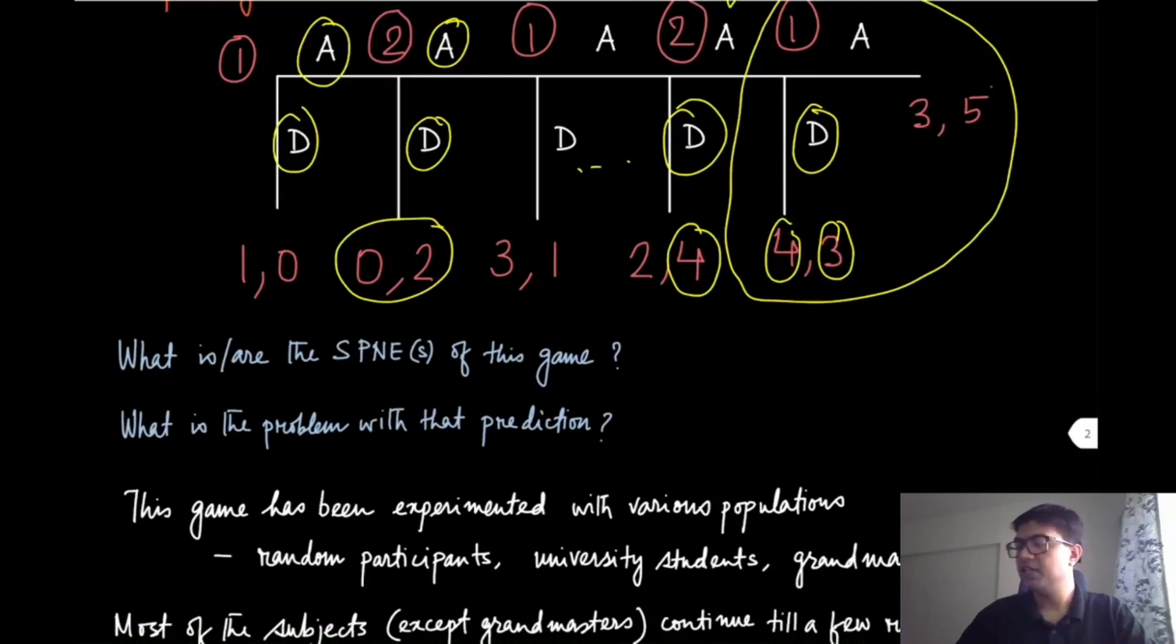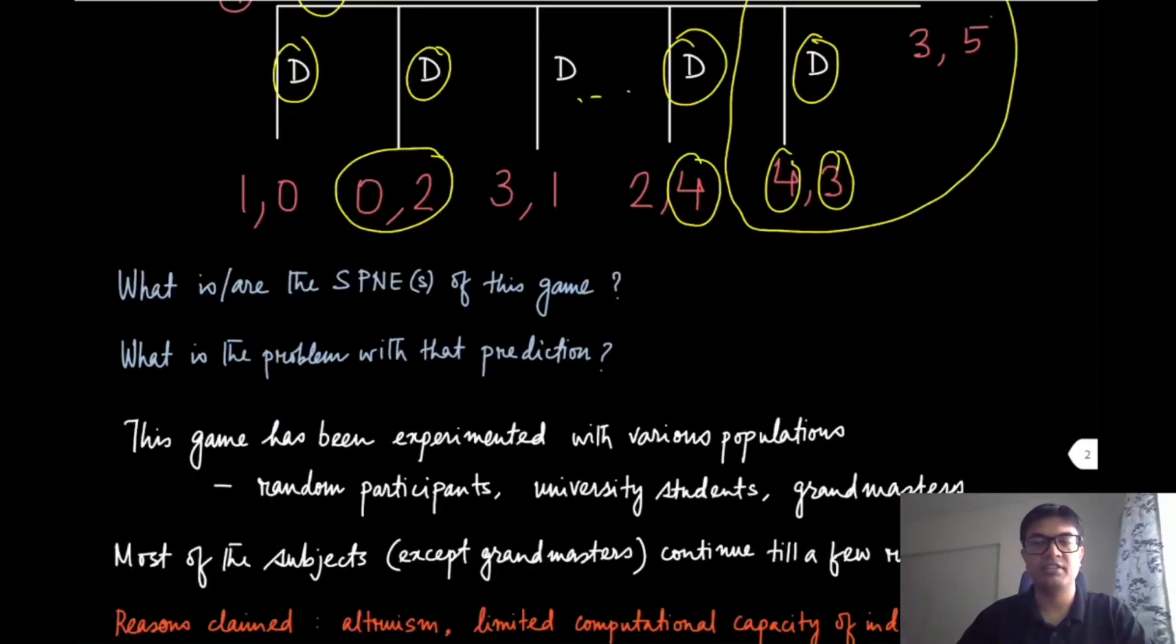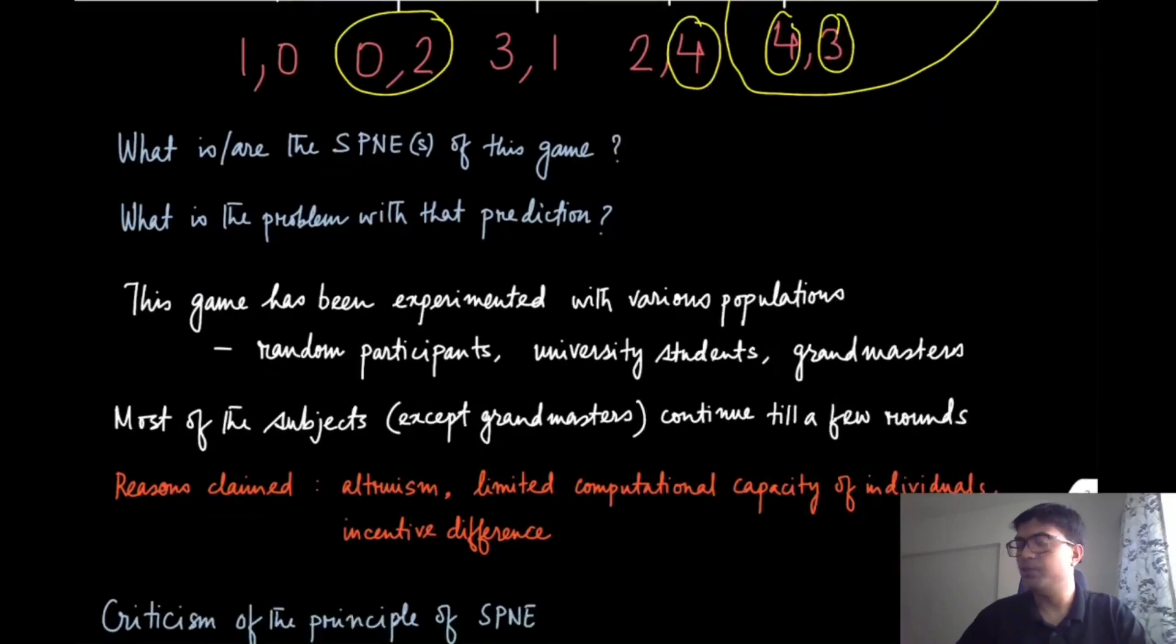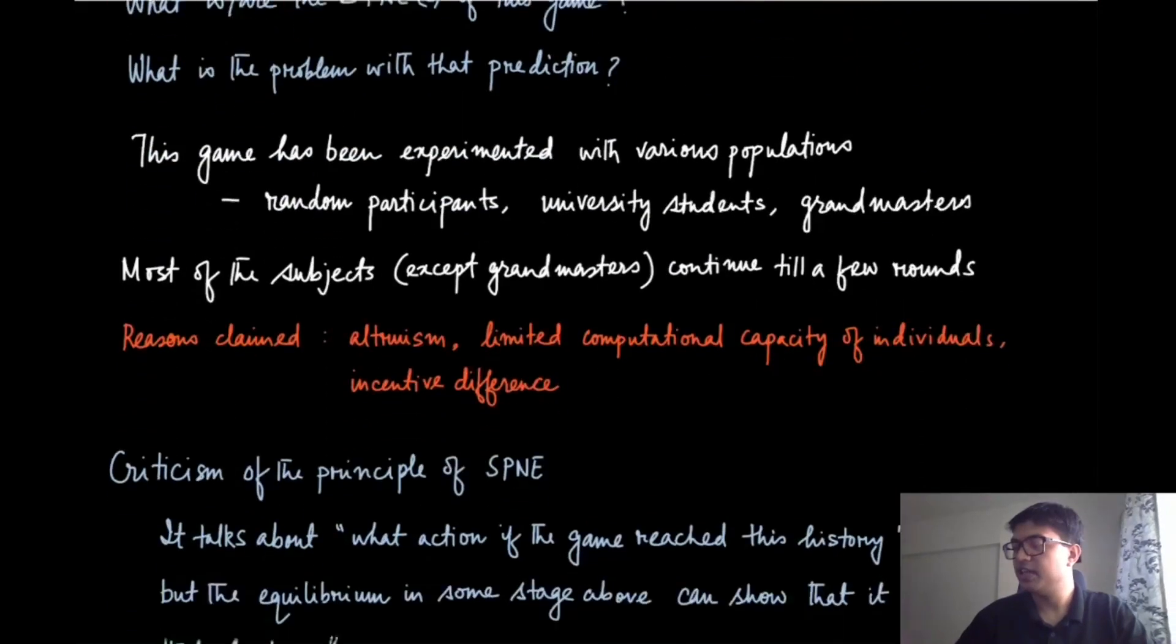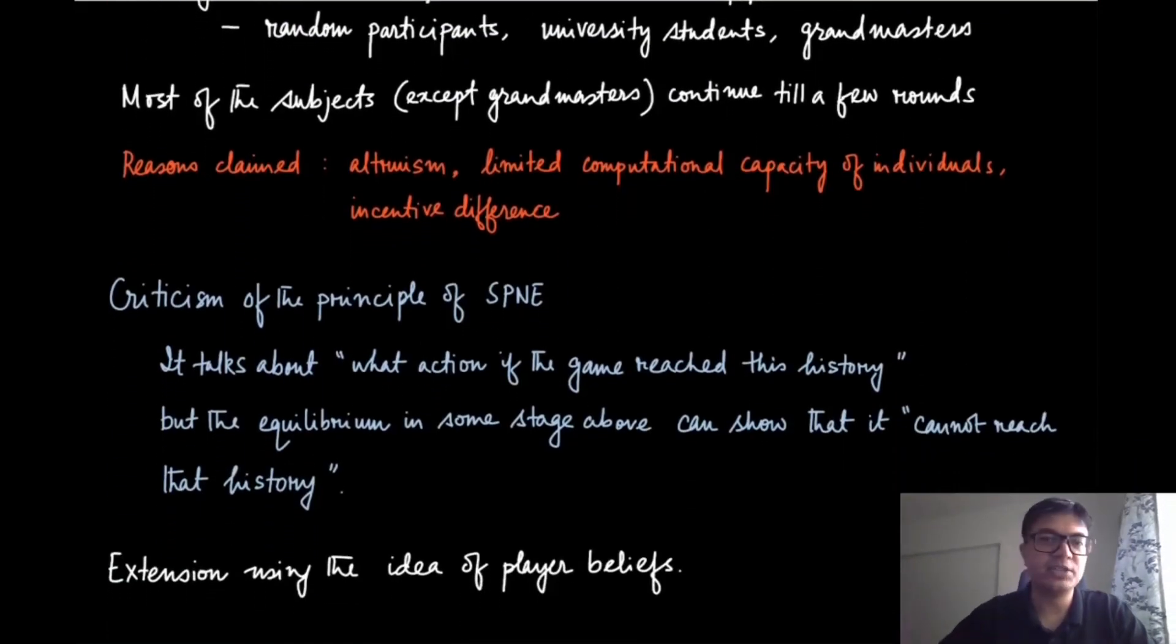Now what is the problem with this prediction? There have been extensive studies of real people playing this centipede game, and the populations were random participants, university students, or even grandmasters of chess. Almost all of them have played it at least for a few rounds—it never happened that it ends at the very beginning. There have been various reasons claimed for this: maybe players are altruistic and care about the utilities of the other players,